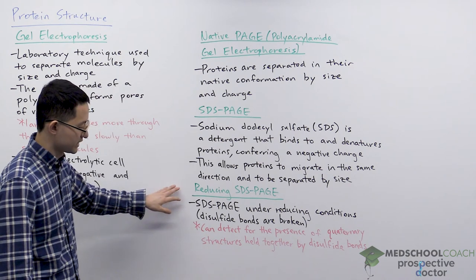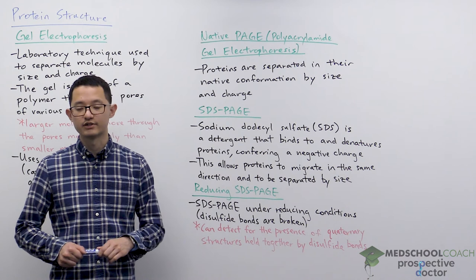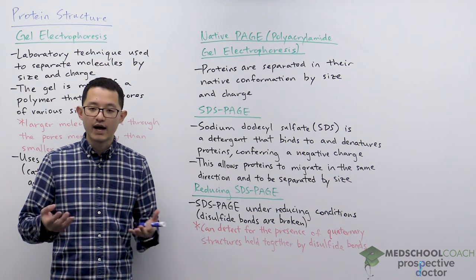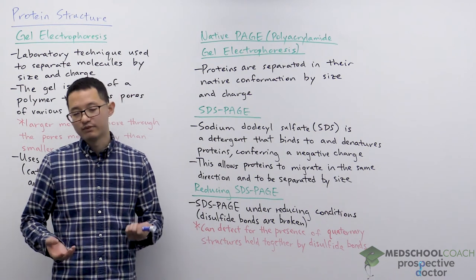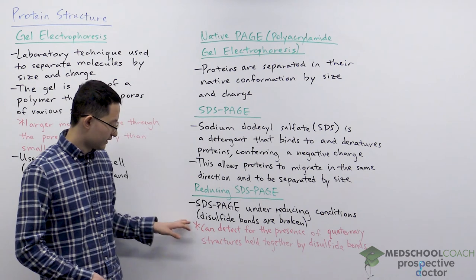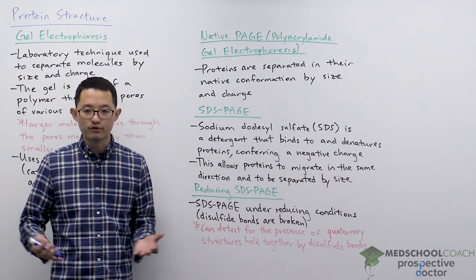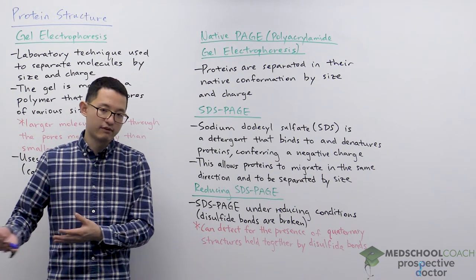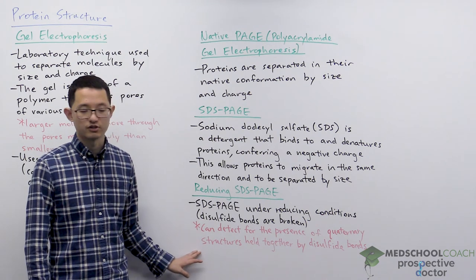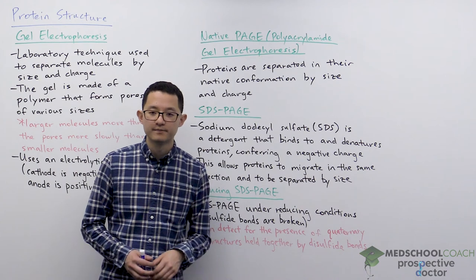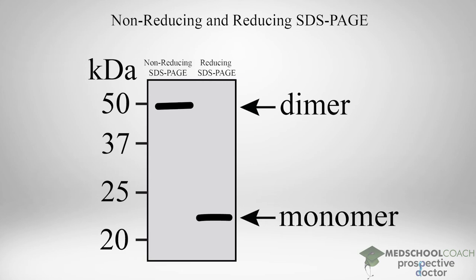Reducing SDS PAGE is simply SDS PAGE under reducing conditions. In addition to adding sodium dodecyl sulfate, you add a reducing agent such as beta-mercaptoethanol, which breaks disulfide bonds. For many proteins this won't make a significant difference to what the gel looks like. In some cases breaking disulfide bonds might allow proteins to unfold more completely so they migrate through the pores more easily and travel a little farther. But a very useful application of reducing SDS PAGE is for investigating quaternary structures that are held together by disulfide bonds. This diagram shows a reducing SDS PAGE gel with two columns — one under non-reducing conditions and one under reducing conditions.